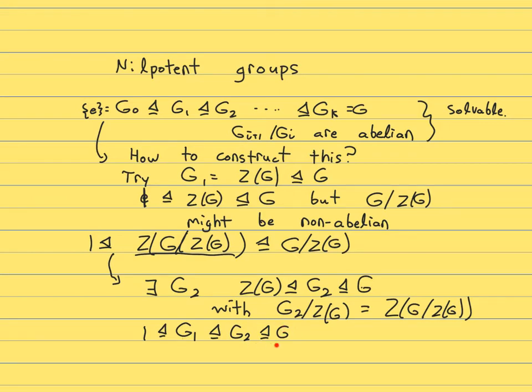Well now we have the problem that this quotient might not be abelian. And now you can see the idea, we keep extending. Now you look at G mod G_2, and while it has an obvious choice of an abelian normal subgroup, namely its center, and we keep extending.